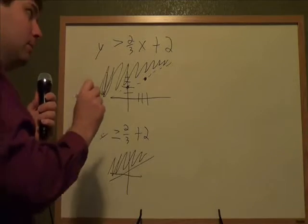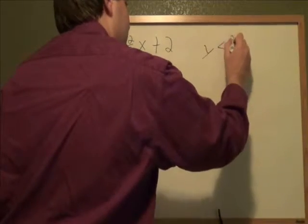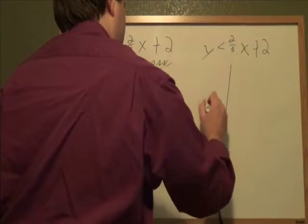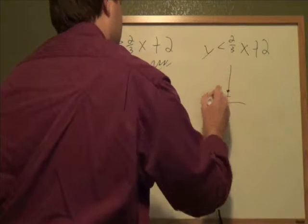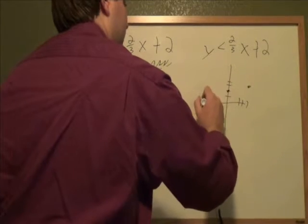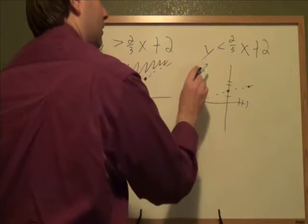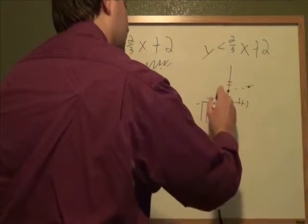So for the other two examples, instead of greater than, it had been y is less than 2/3x plus 2. That still would have had the same up 2 for the starting point, up 2 over 3 for the next point. Still would have been dotted, because it's still not an or equal to, it's just a less than. And then if the y is less than, you just shade under it.